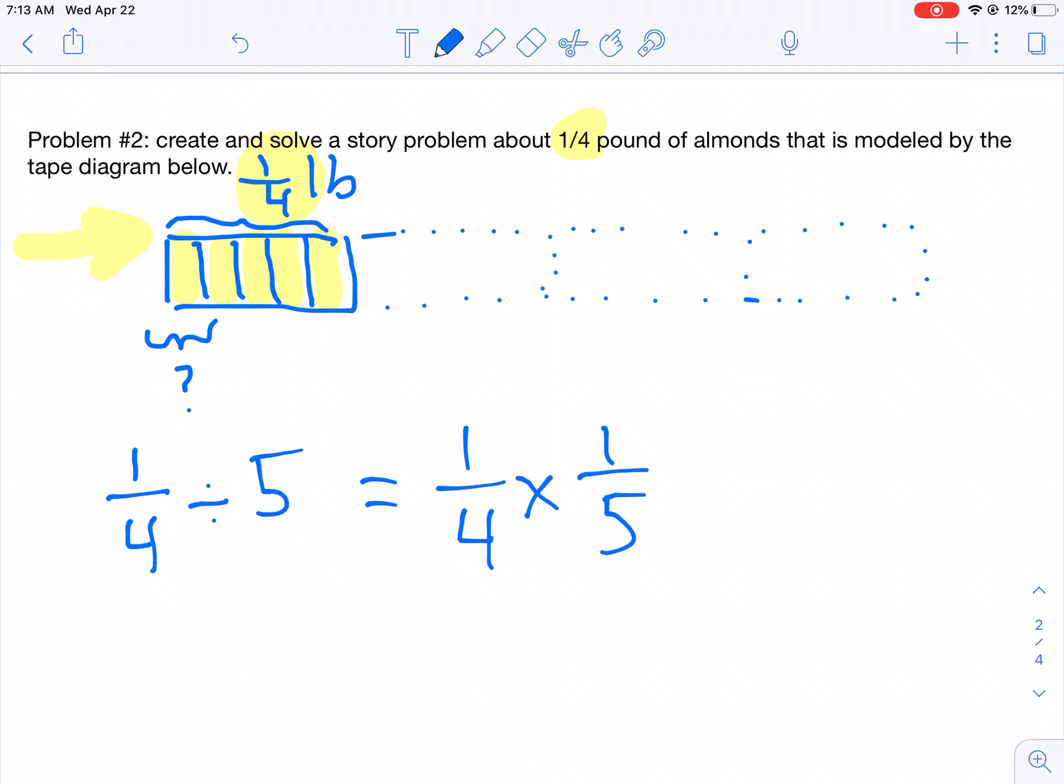So what I want you to do right now is pause the video and create your own story problem about one-fourth pound of almonds that is divided into five equal parts. Then you will check your answer and unpause the video.